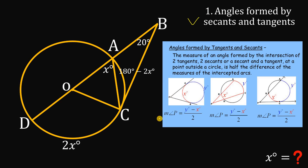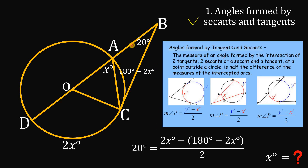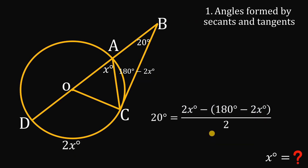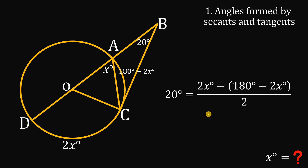Using this theorem, the 20-degree angle equals the larger arc, 2X degrees, minus the smaller arc, which is 180 degrees minus 2X degrees, all divided by 2. So our equation is: 20 degrees equals (2X degrees minus (180 degrees minus 2X degrees)) divided by 2. We will now solve for X.